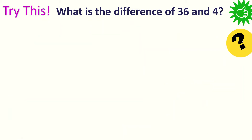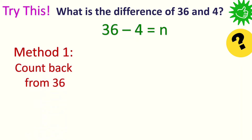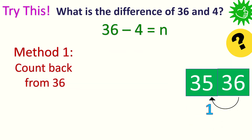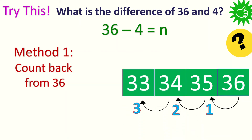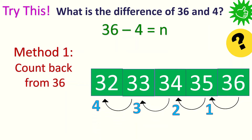Let's have another example. What is the difference of 36 and 4? When you say difference, we are looking at the answer in subtraction. We will subtract 36 and 4. Let's use counting back — we count back from 36. Before 36? 35. Before 35? 34. One more: 33. And another: 32. So, 36 minus 4 equals 32.